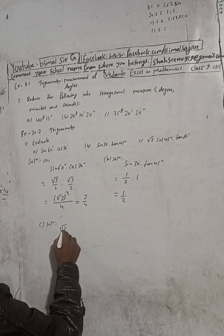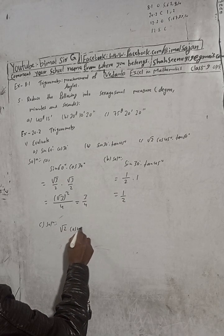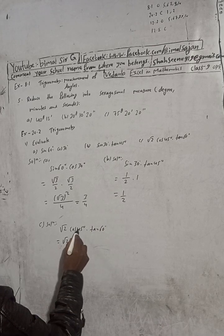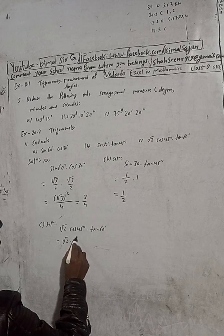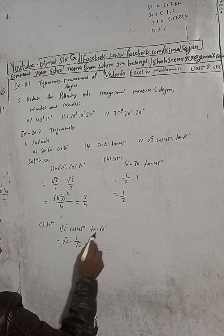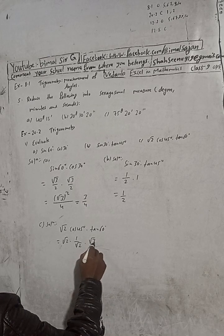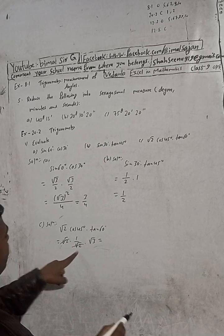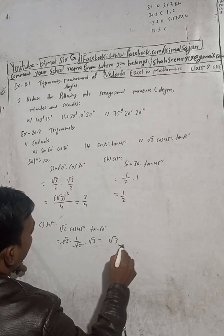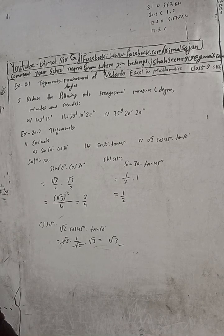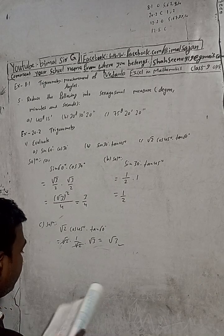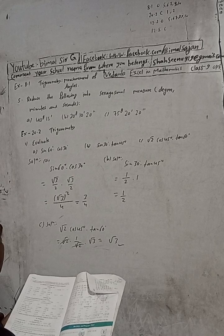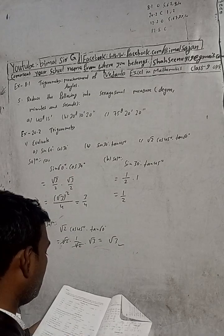Part C: root 2 — cos 45 degree into tan 60 degree. cos 45 is 1 by root 2, and tan 60 is root 3. So root 2 divided by root 2, and we get root 3. The solution gives three by four, one by two, root three — that's the answer.